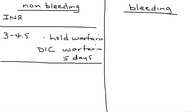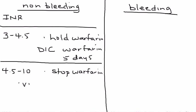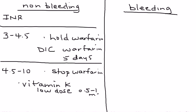The second scenario is a non-bleeding patient whose INR is between 4.5 and 10. Again, you stop the warfarin, but in addition you also give vitamin K to reverse the warfarin. The vitamin K given is a low dose, usually 0.5 mg to 1 mg, given orally (PO).